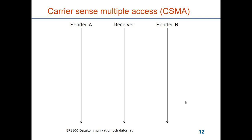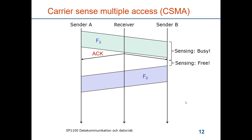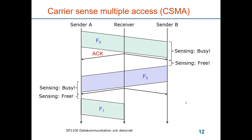We are back to the time axis with A and B sending to the receiver in the middle. The frame from sender A propagates and also reaches sender B. If B gets a frame to send, it will sense the medium and see it is busy because a frame from A is arriving. Once A's frame is fully transmitted, the receiver sends an acknowledgement, which is also heard by sender B. Now sender B senses the medium, sees that it is idle, and transmits its frame. So does carrier sense resolve all collisions? Let's see.